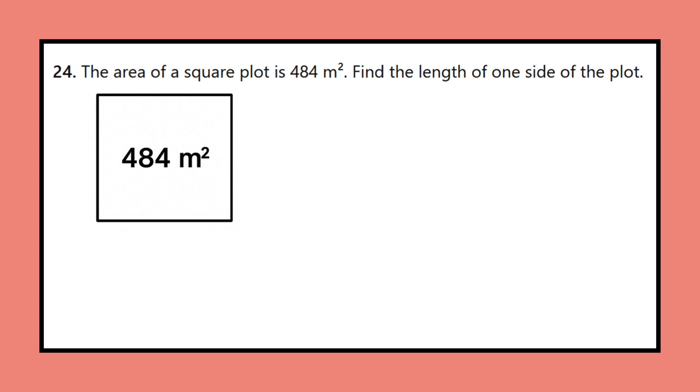Question 24: The area of a square plot is 484 square meters. Find the length of one side of the plot.